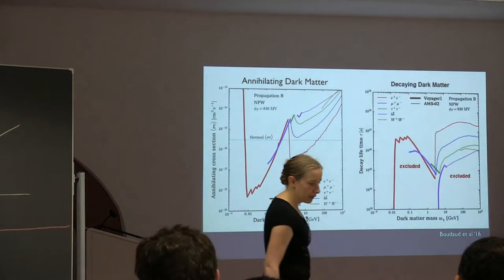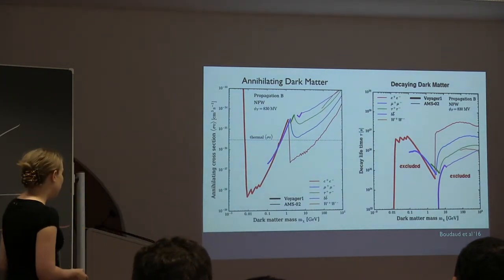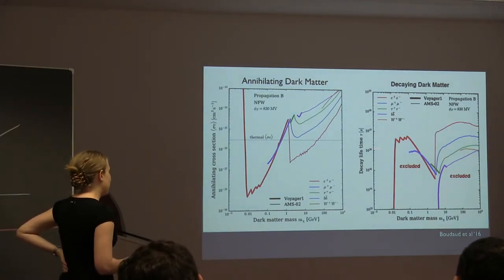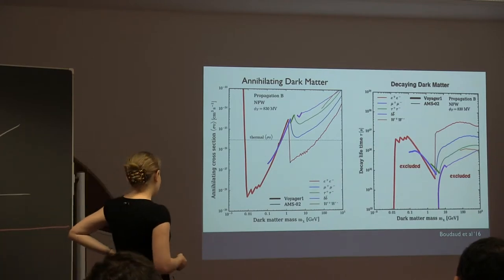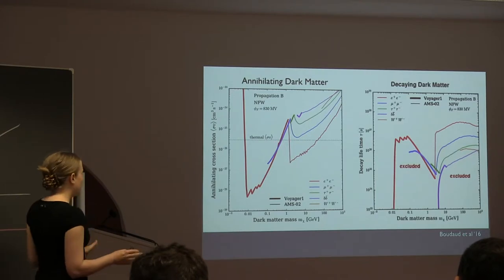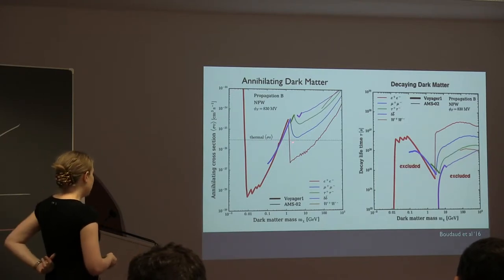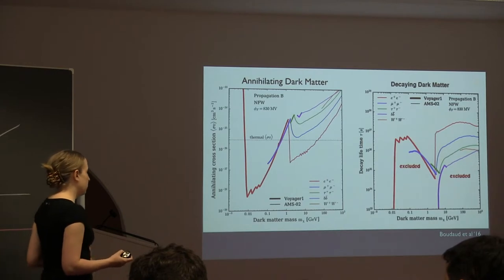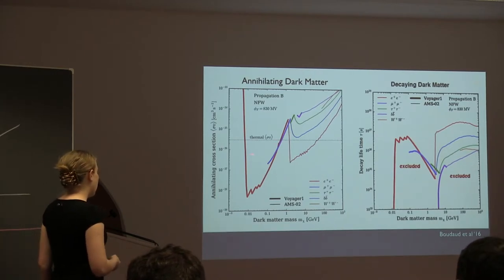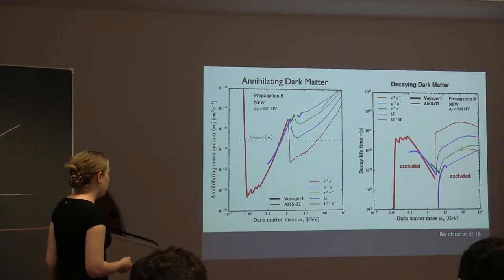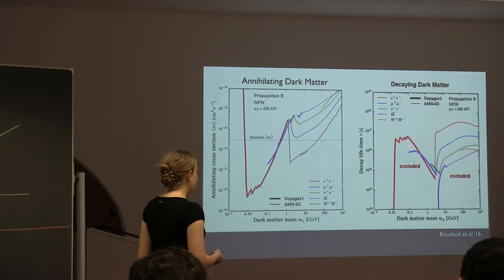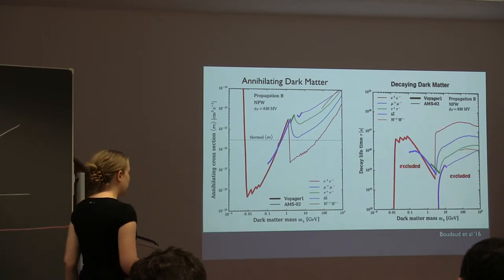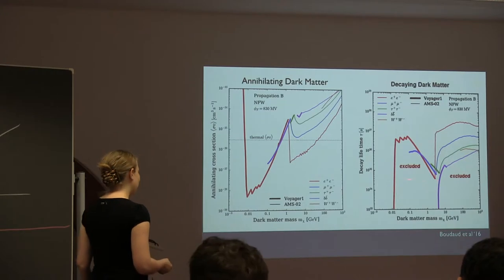Voyager can't measure very high energy cosmic rays since the spectrometer was built decades ago, but it provides the best limits on 10 MeV to GeV dark matter decaying to electrons and positrons, and would provide the best limits on annihilation except that the CMB bounds are better. A paper by Boudaud et al. shows constraints on the annihilation cross-section and on the decay rate from Voyager — though without systematic errors, take them with a grain of salt. For annihilation into e+e- below the GeV scale, you can go well below the thermal relic value.